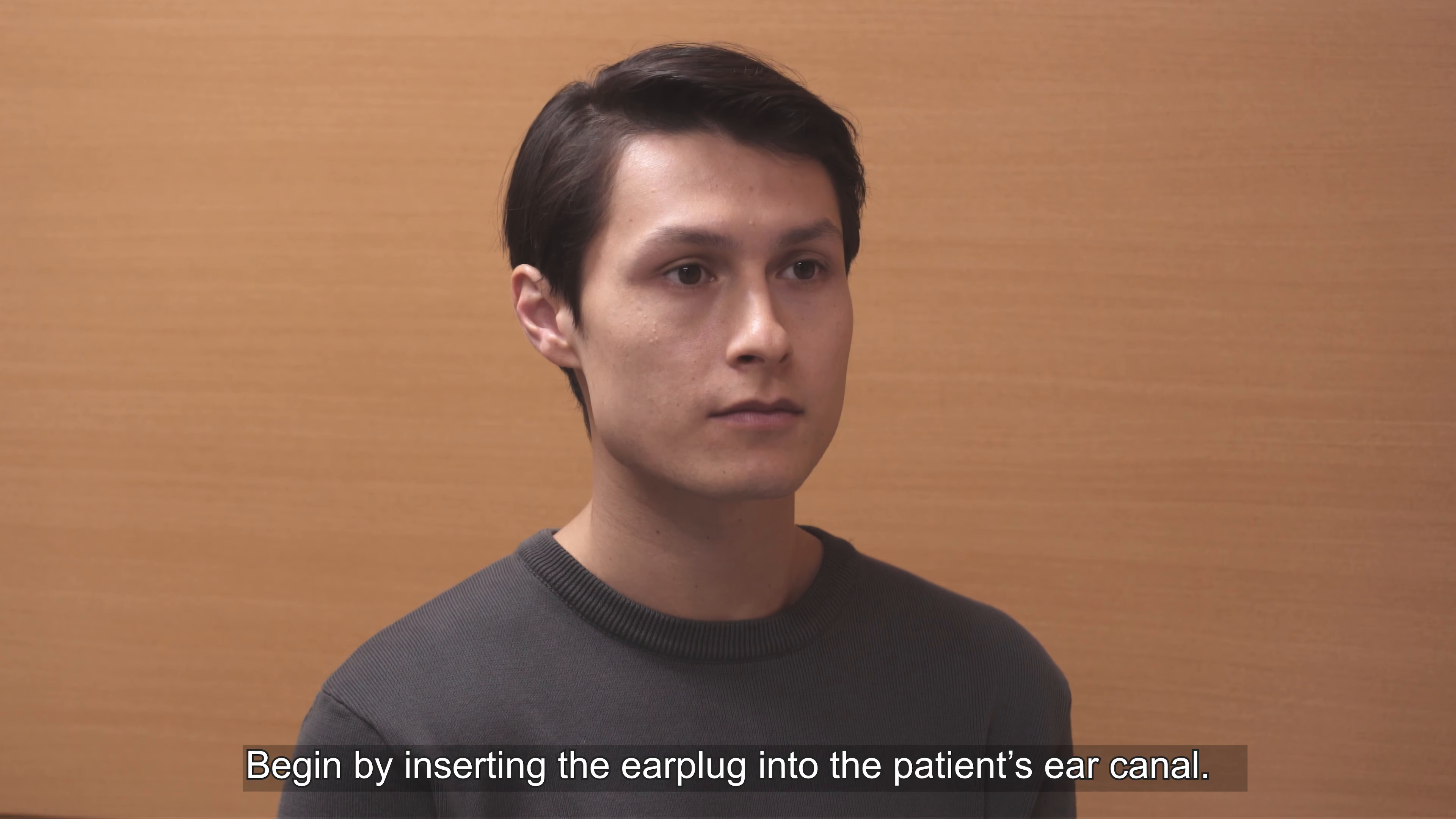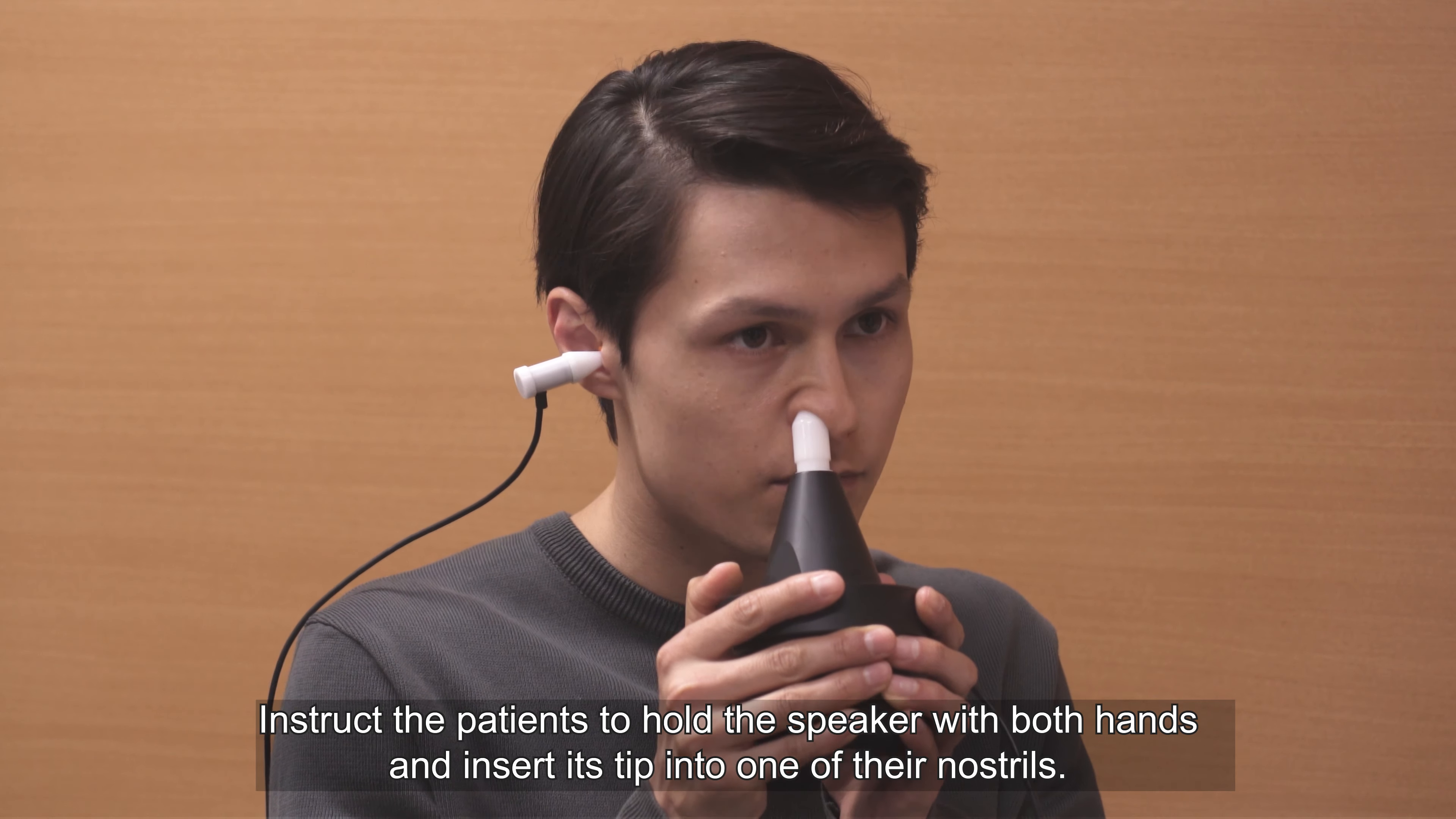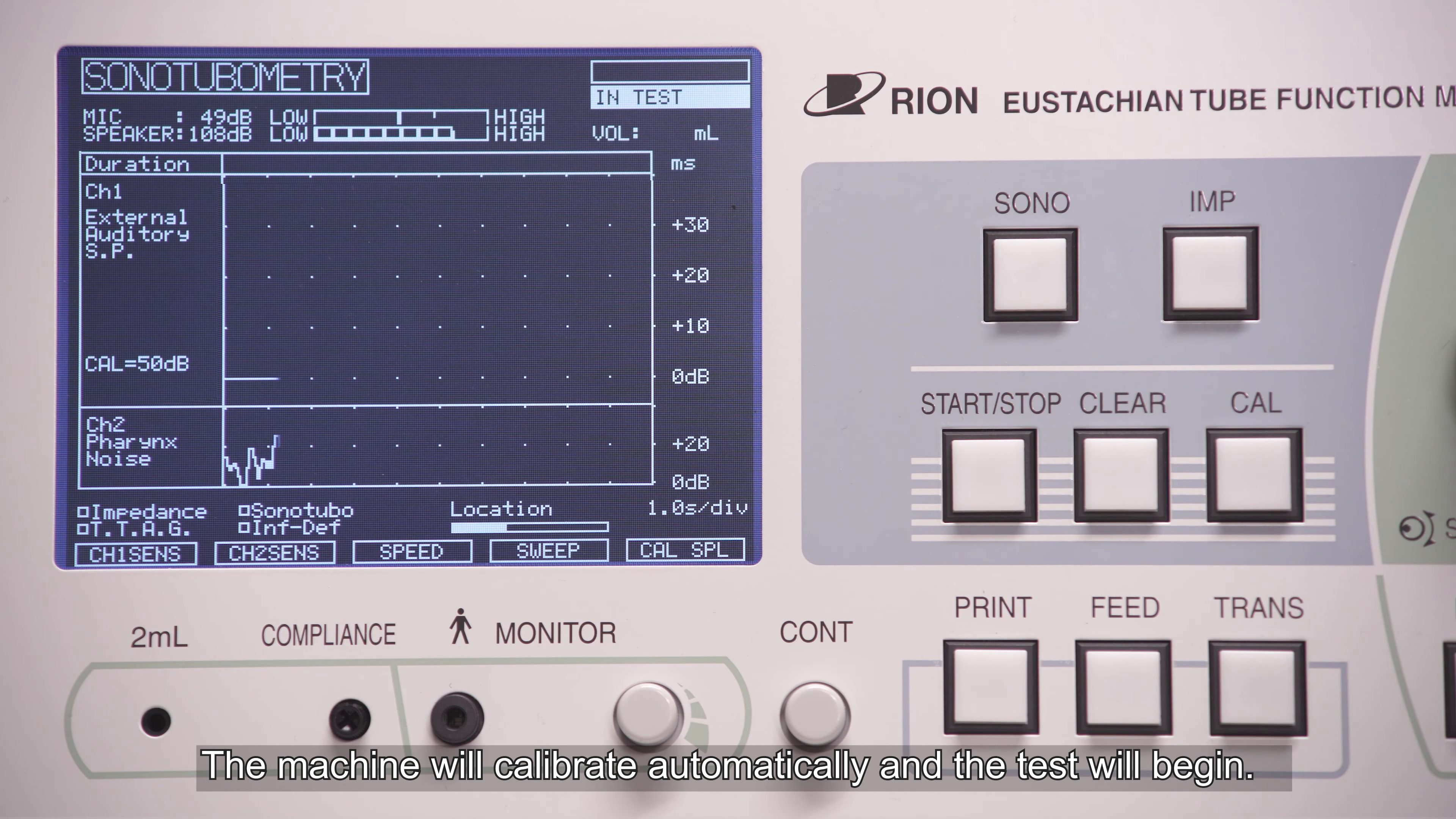This section will demonstrate the full test procedure. Begin by inserting the ear plug into the patient's ear canal. Instruct the patient to hold the speaker with both hands and insert its tip into one of their nostrils. Push the start stop button to begin the measurement. The machine will calibrate automatically and the test will begin.